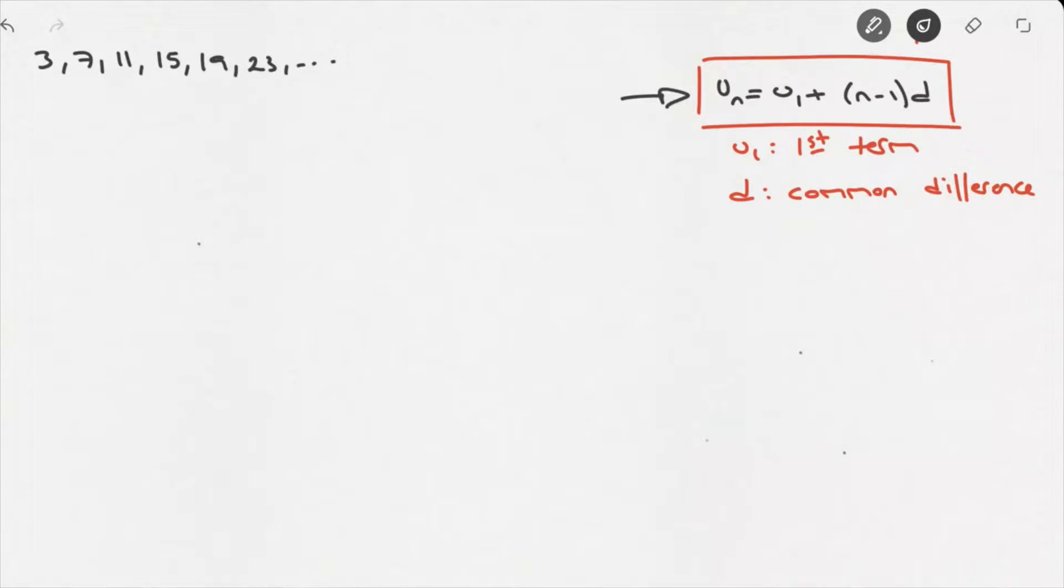And since it's an arithmetic sequence, we can use this formula. So, we're going to need to note down two things, or make a note of two things. We need the sequence's first term, u_1, and its common difference, d.